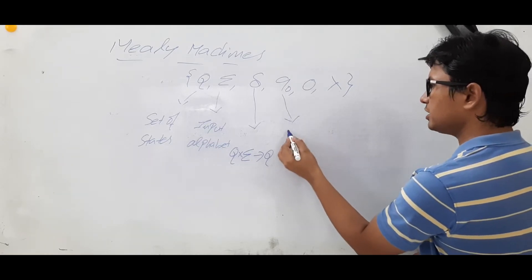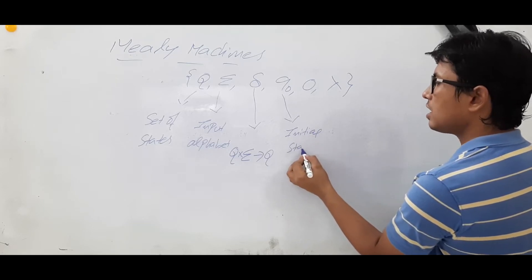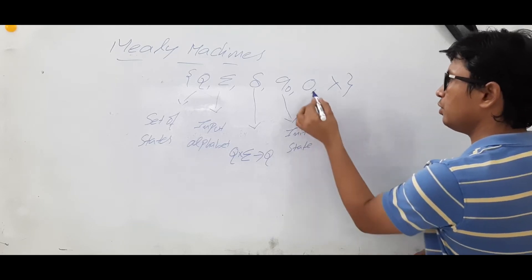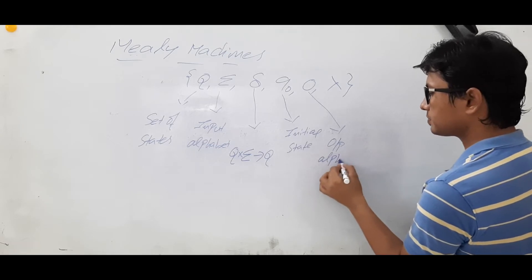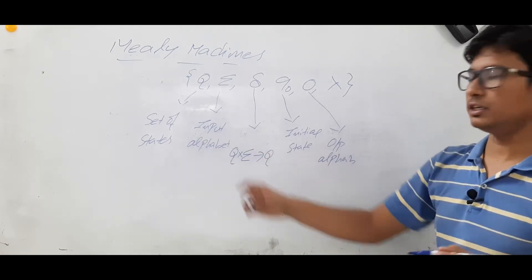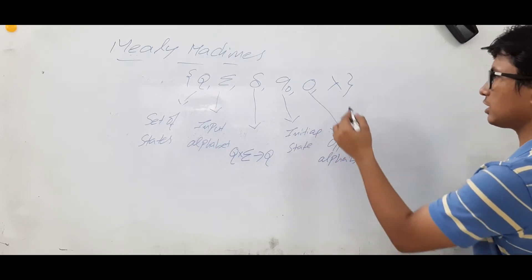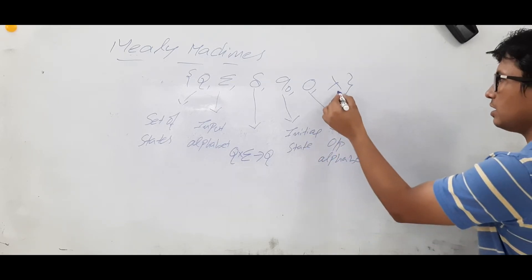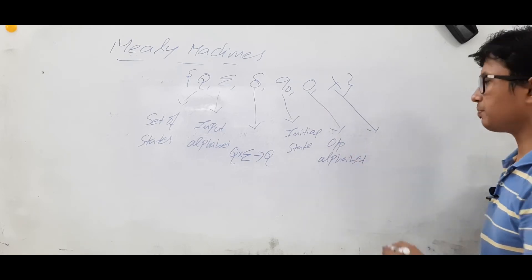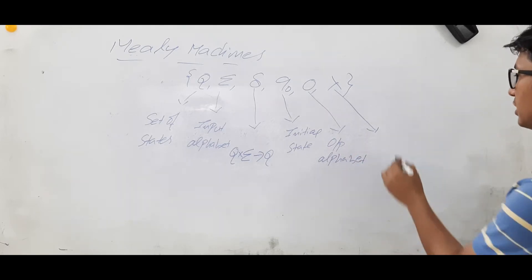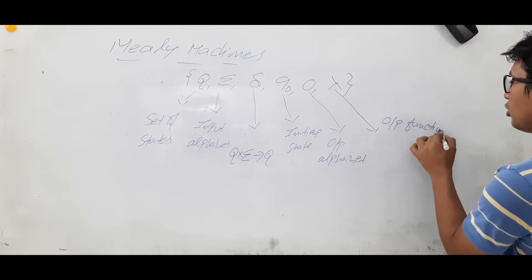Q-naught is your initial state — you will have only one initial state. O represents the set of output alphabets. And lambda represents the output function.